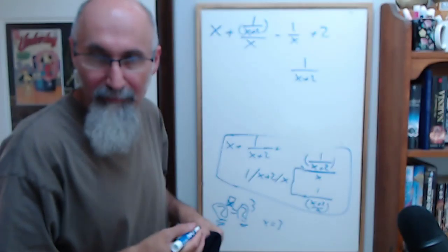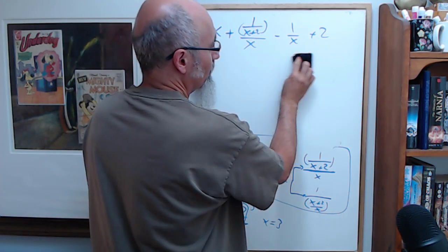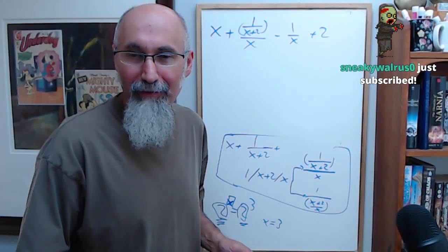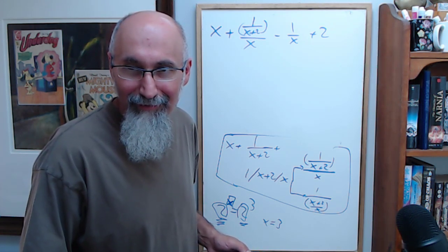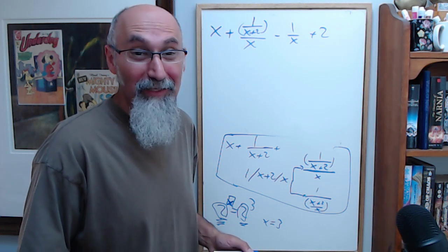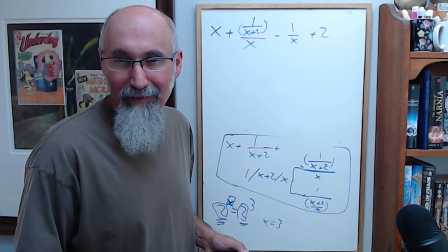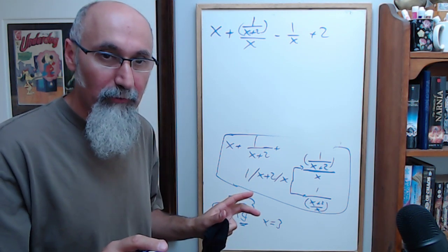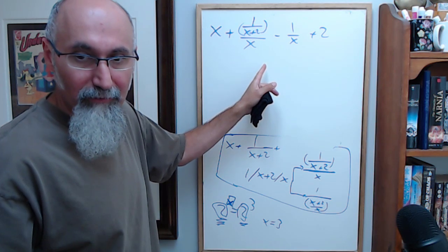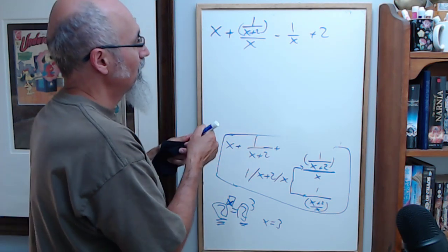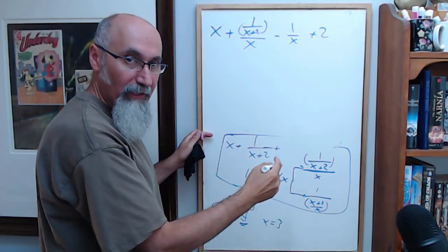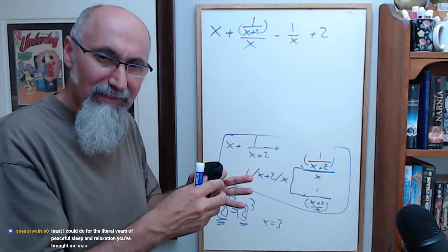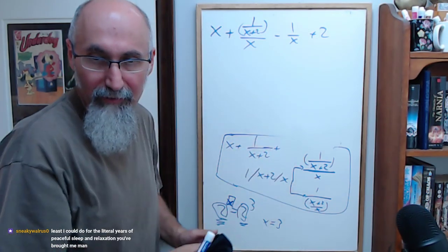There are multiple ways to do this, but I would take care of the ugliest fraction first. Whenever you have fractions on top of fractions, write them sideways as a division statement. So 1/(x+2) divided by x becomes 1/(x+2) times 1/x, which gives 1/((x+2)·x). This simplifies the nested fraction.